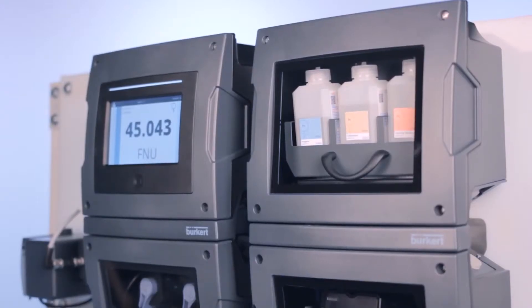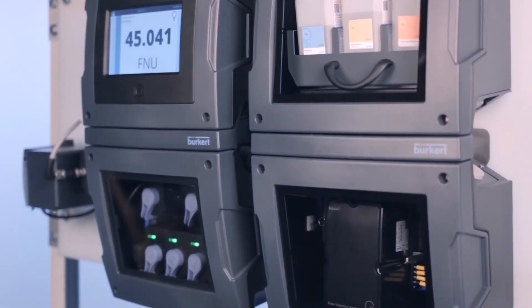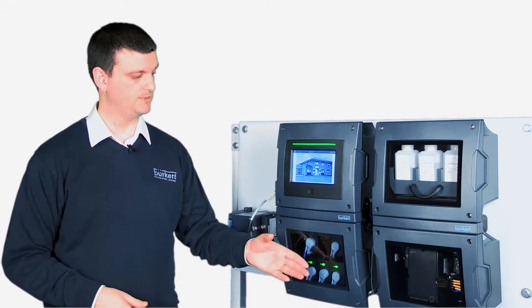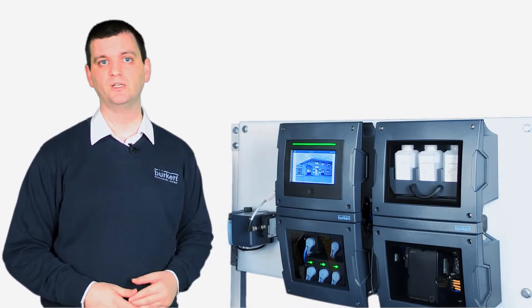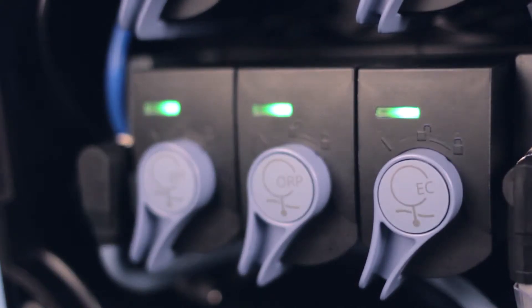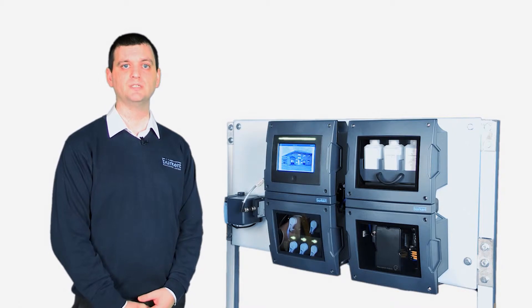Unlike other multi-parameter systems available on the market, Burkert's Type 8905 does not use a centralized processor system. Instead, cubes communicate directly with output cards found in the upper housing. This is important because it allows users to remove and calibrate sensors without interrupting other parameters and processes.